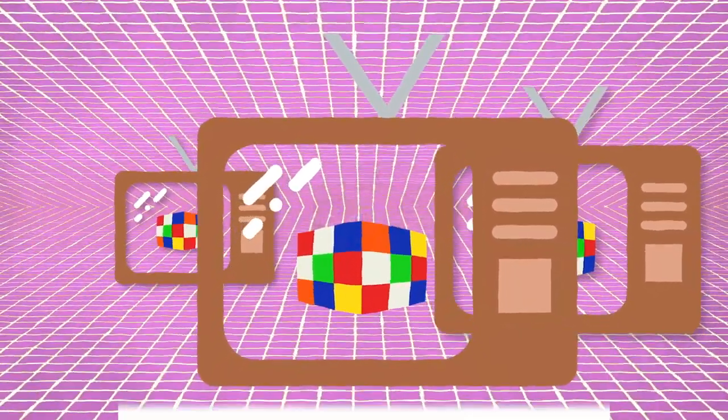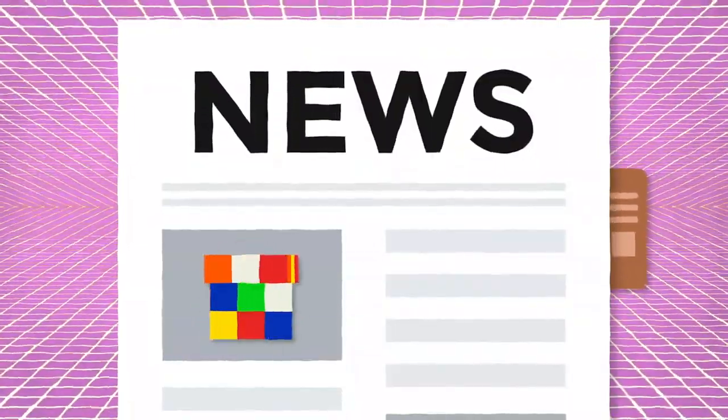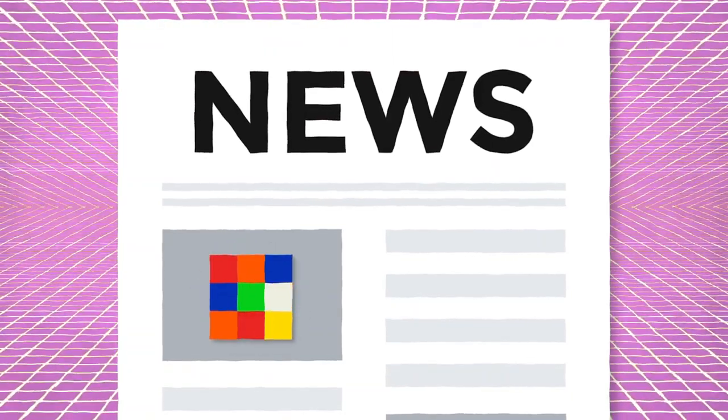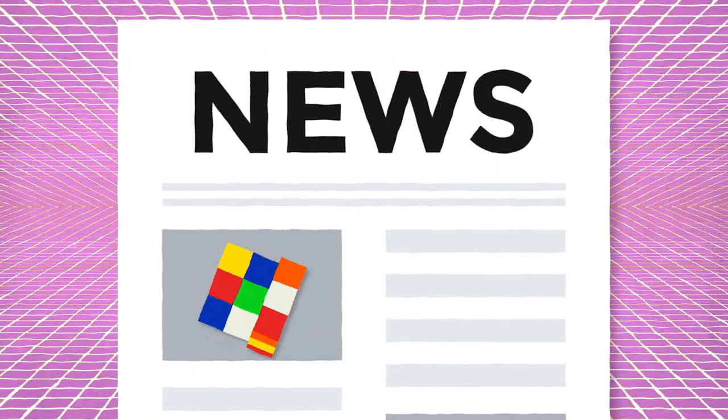TV commercials were supplemented with newspaper ads. By the holiday season, Rubik's Cube was being advertised in 100 markets. But it wasn't just advertising that led to the cube's popularity.